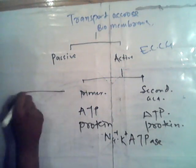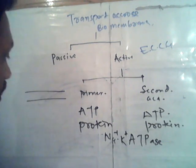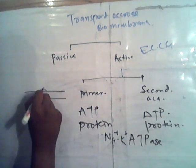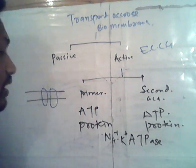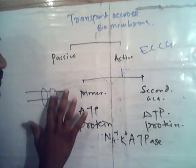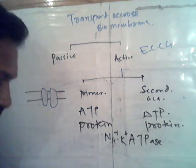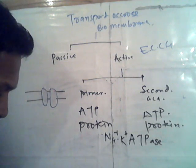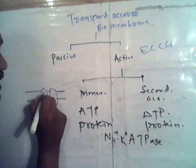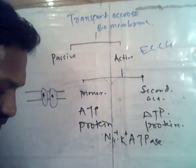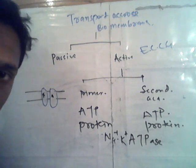What happens in the case of sodium-potassium ATPase? For example, this is a cell membrane. This is the ATPase — it is a channel, not an enzyme. It contains beta and alpha subunits.